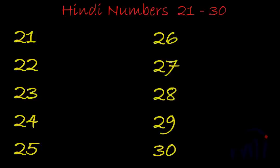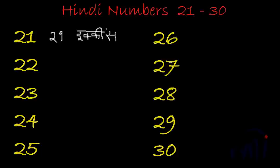The first number is 21, and in Hindi it is called ikkis. It is written as: do, ek — ikkis. Choti i, aadha ka, poora ka, badi i ki matra, sa — ikkis.